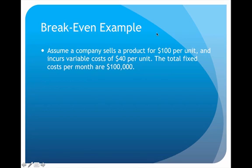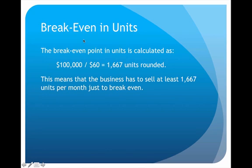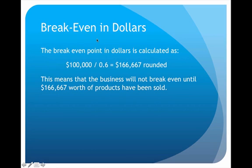Using our example: a product selling for $100 per unit, variable costs of $40, and total fixed costs of $100,000 per month. Dividing the fixed cost of $100,000 by the contribution margin of $60 gives approximately 1,667 units. This tells us the business will not break even until they have sold at least 1,667 units each month.